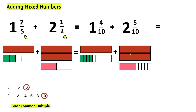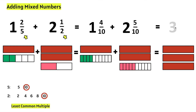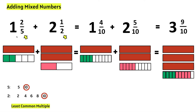We have one whole plus two wholes — that makes three wholes. And we have four-tenths plus five-tenths. Four tenths plus five tenths gives us nine-tenths. So we know that one and two-fifths plus two and a half is the same thing as three and nine-tenths.